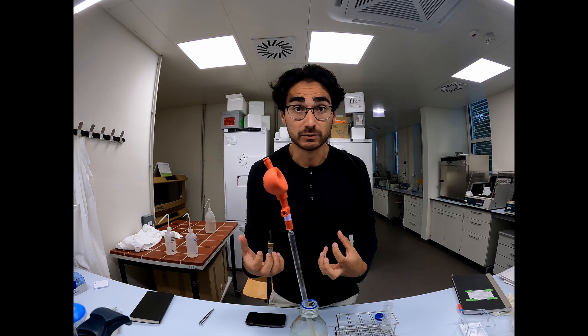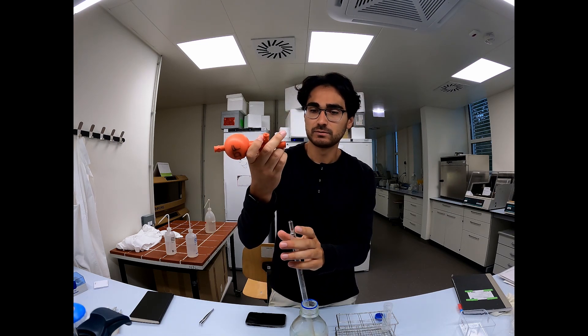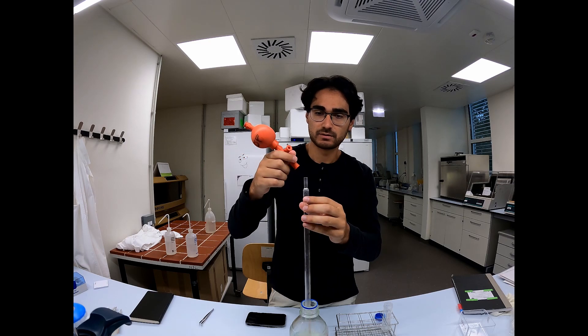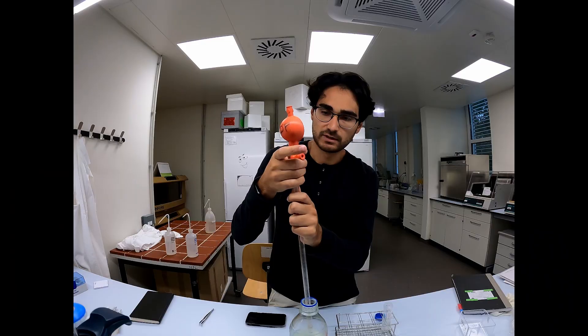So how do you use a pipetting balloon? It's actually quite simple. You take the pipetting balloon, you attach it to your glass pipet or to whatever pipet you have. Put it on so that it's very snug.